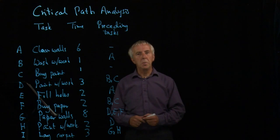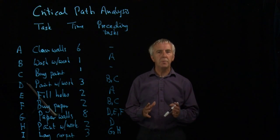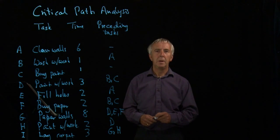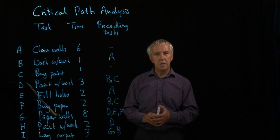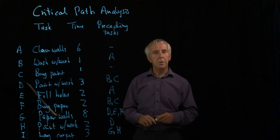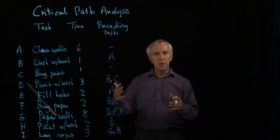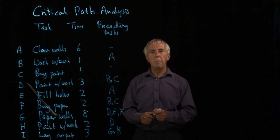One common activity in management is planning a large project which consists of a number of tasks which have to be done in the right order. A classic example of this at the moment is the London Olympics, where they're planning and building the site for 2012. They have to get everything done in sequence. And the method of doing this is called critical path analysis.